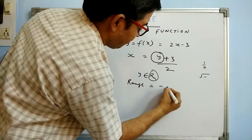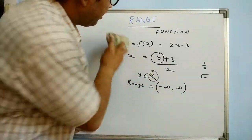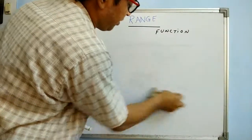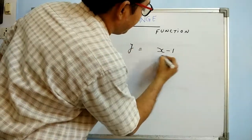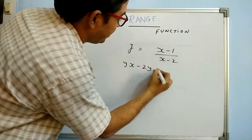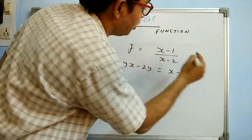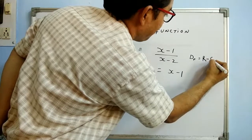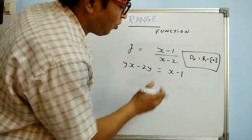One more example using the technique of making x the subject and seeing what values y attains. Suppose y = (x − 1)/(x − 2). This function is defined for all values of x except 2, so the domain is all real numbers except 2. We must keep this in mind while finding the range, because it is important.